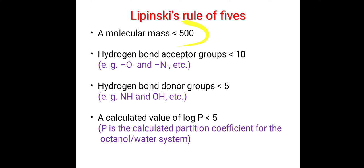The second one is hydrogen bond acceptor groups should be less than 10. Hydrogen bond acceptor groups, for example, oxygen, nitrogen, etc.